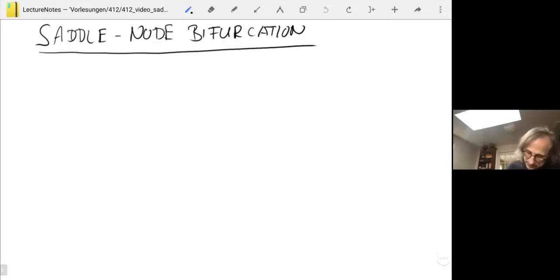For that, let's look at a simple one-dimensional system. We have our x dot equals f of x and mu. Let's assume we have a fixed point. For simplicity, let's assume that fixed point is at x naught equals zero. We pick also mu naught equals zero. We can just shift the coordinates to do that.